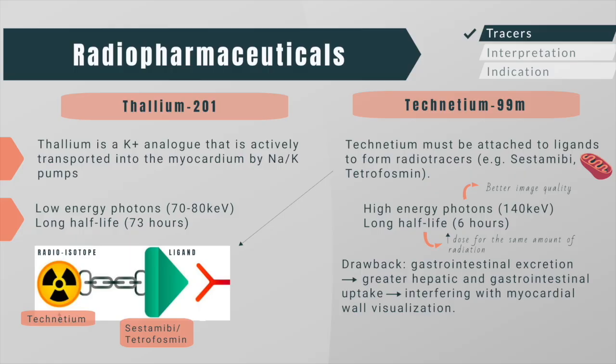A potential drawback of technetium-labeled radiotracers is their gastrointestinal excretion, resulting in greater hepatic and gastrointestinal uptake. This can interfere with myocardial wall visualization.